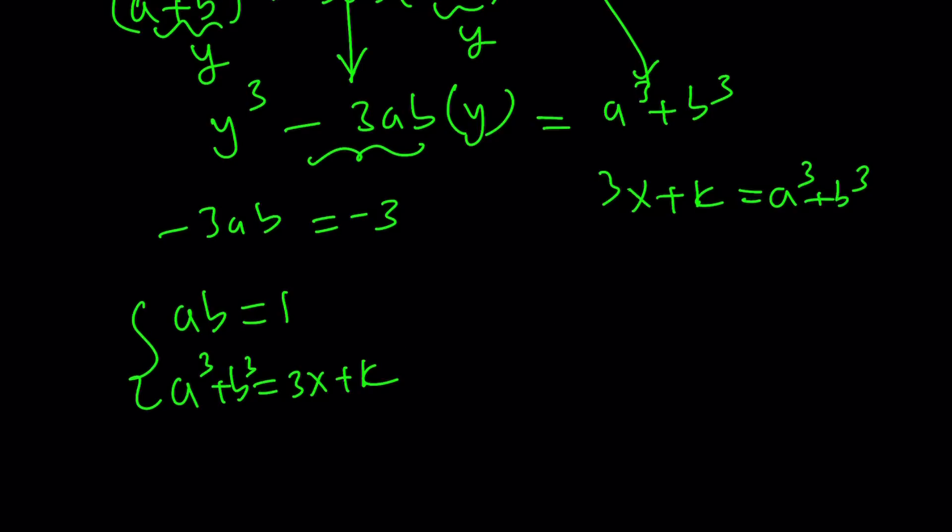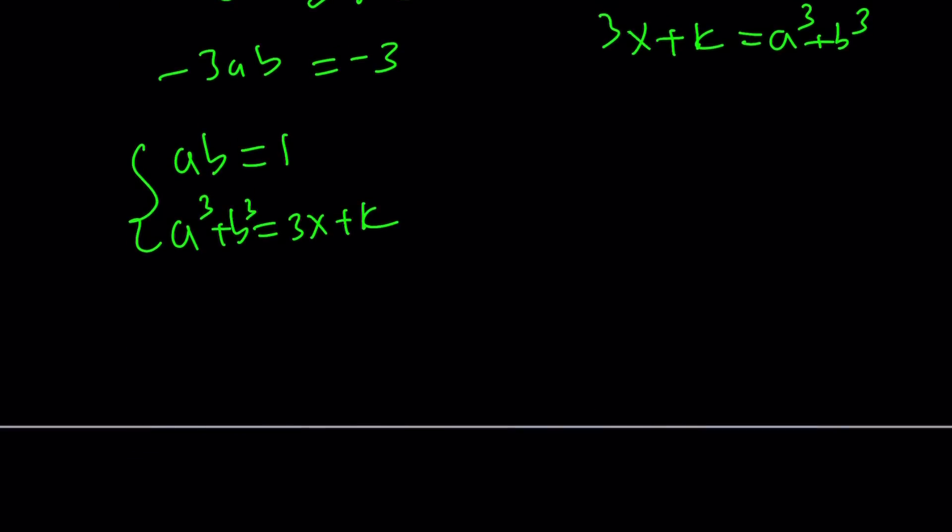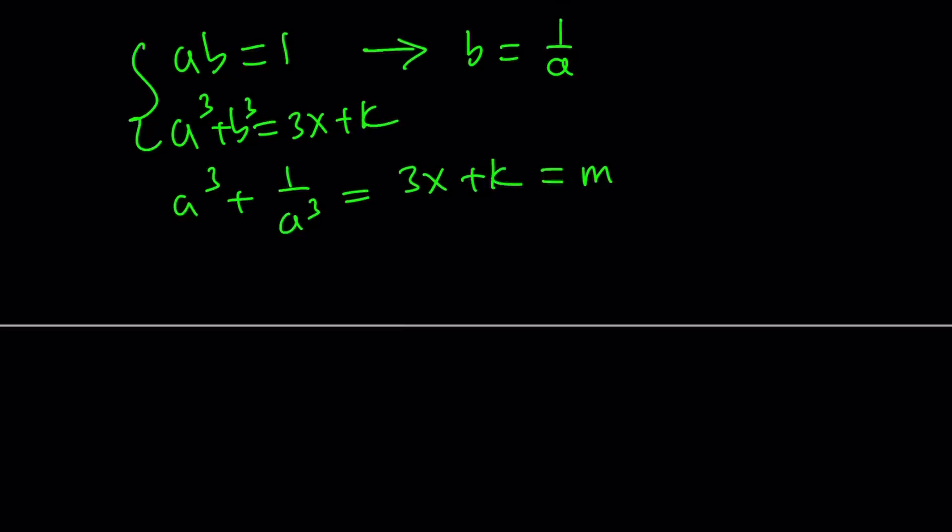It is quadratic because a and b are multiplied. So, you can make this a quadratic in a cubed or b cubed. So, let's go ahead and replace b with 1 over a. And we get a cubed plus 1 over a cubed equals 3x plus k. And if you want, you can call this some other constant like m to make things a little easier.